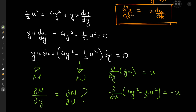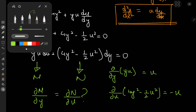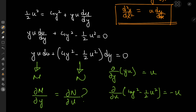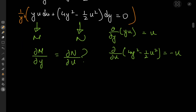We can turn it into an exact equation by multiplying by a suitable integrating factor. Noticing that the only difference is a sign difference, it's pretty easy to come up with one. Multiplying by 1/y squared should do the trick. Let's check whether this intuitive guess works — there are more formal algorithms, but that takes away the fun.